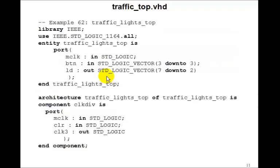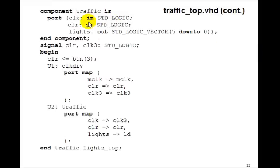We can make a top-level design. We just need buttons 3 down to 3 for clear and clock in, and LD 7 down to 2 for our six LEDs. We'll put in the component clock_div — we only have two of them — and traffic. Clear goes to button 3, then we wire up clock_div and traffic so that traffic gets clock_3, our 3 Hz clock, and the lights go to the six LEDs. Compile and implement this top-level design and download it to your FPGA, and you should be able to watch the traffic lights go on the LEDs.